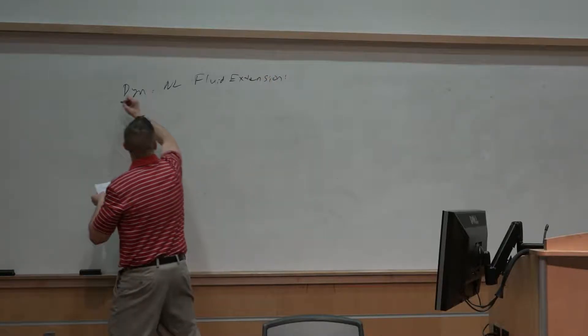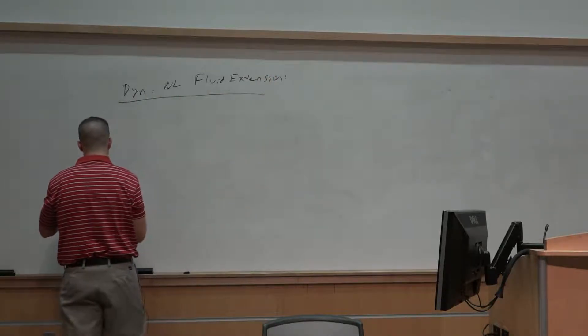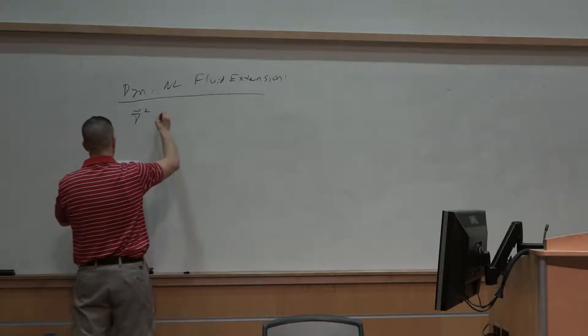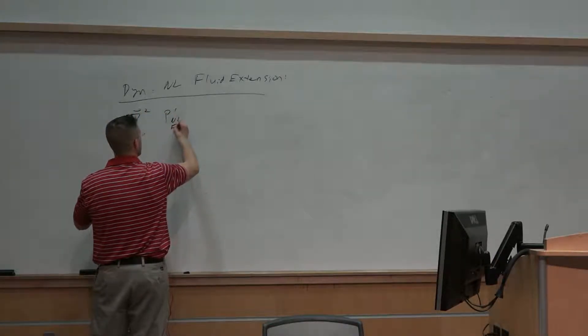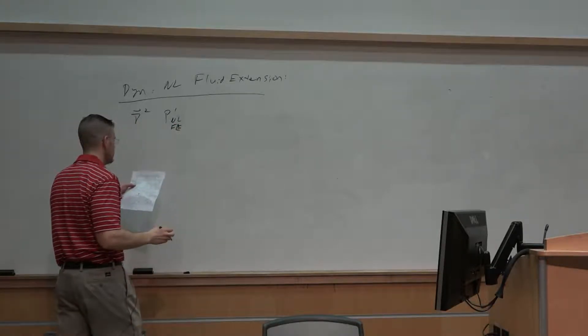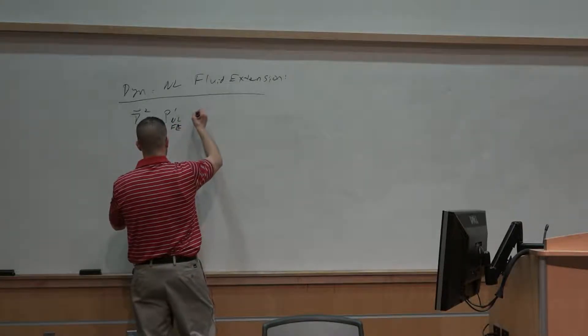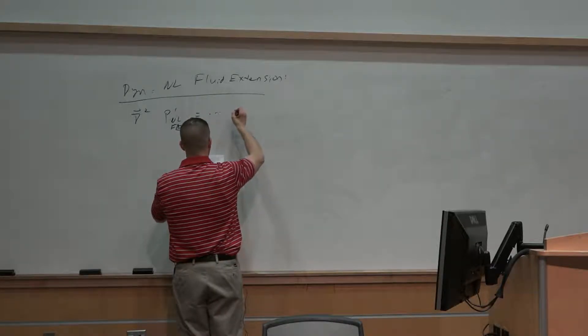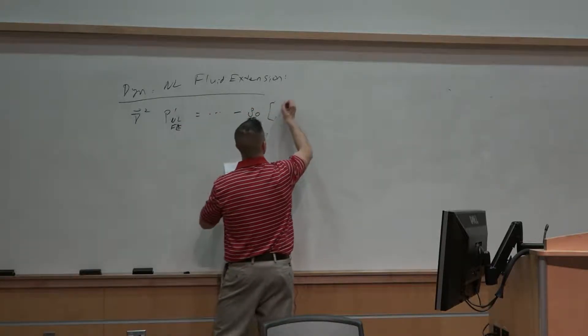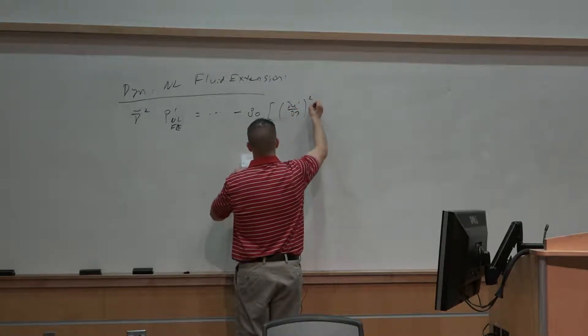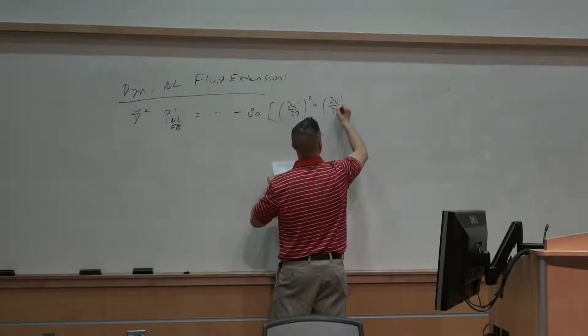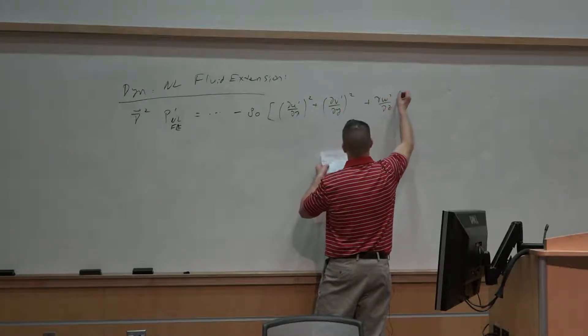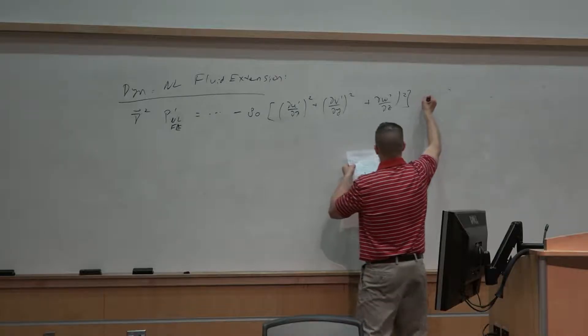And if you recall from the earlier perturbation pressure term over here, we have del squared P prime NL. We'll call this Fe to refer to the fluid extension, and that's going to be equal to a bunch of other terms: minus rho naught times partial u prime partial x squared plus partial v prime partial y squared plus partial w prime partial z squared plus dot dot dot.